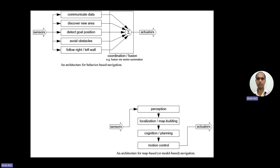In the diagram, both types of techniques are shown. In the upper diagram, sensors provide data for behavior-based navigation — communicating data to discover new areas, detect the goal position, avoid obstacles, and follow the right or left wall. For example, moving from point A to B, the robot follows the right wall. Through that, it can identify where it is going and where there are obstructions. Finally, it will reach the goal, or we can put a mark on the wall of room B and the robot will identify when it has arrived.